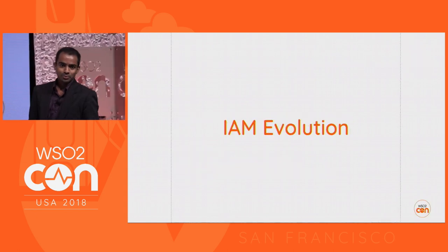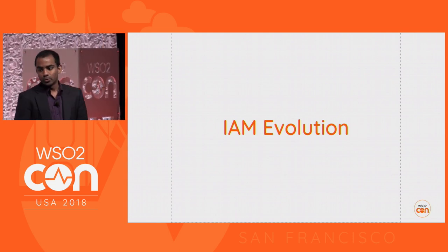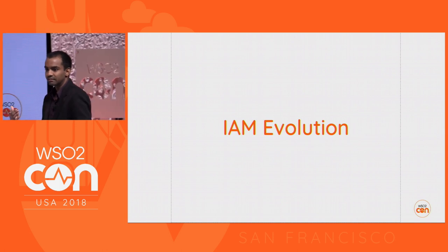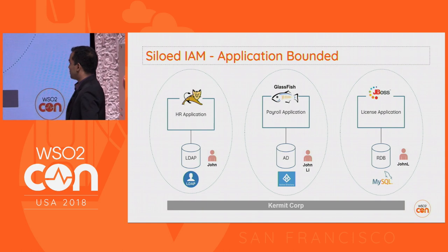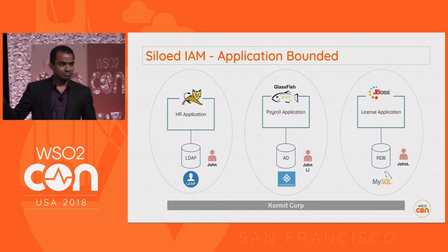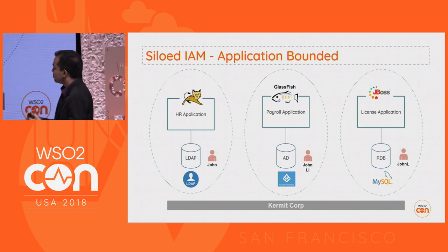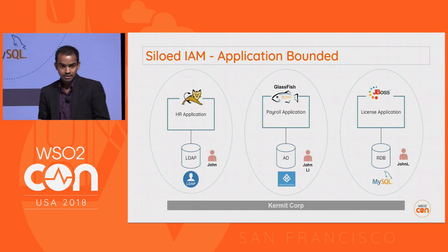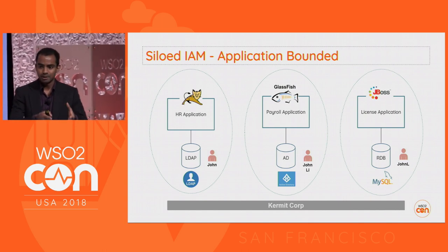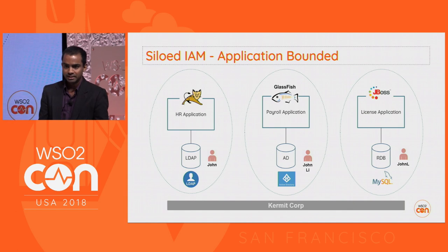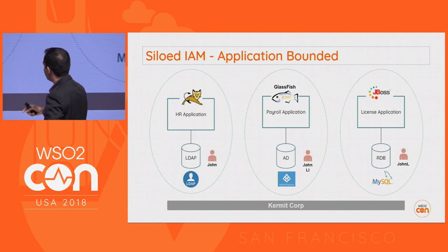Before jumping into the present time, let's take a quick look at how IAM evolved over the recent decades. You must be pretty familiar with this setup — different applications all managing identity by themselves. We call them siloed IAM. They are independent, doing everything independently with no integration at all between different applications.